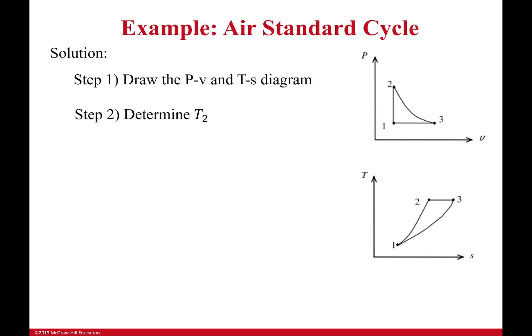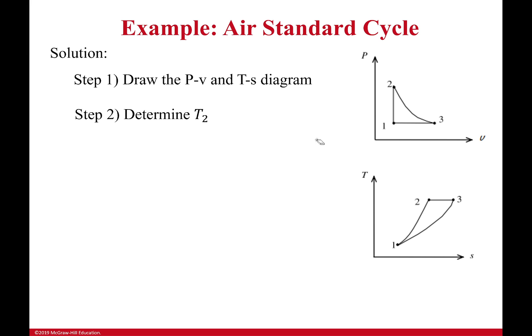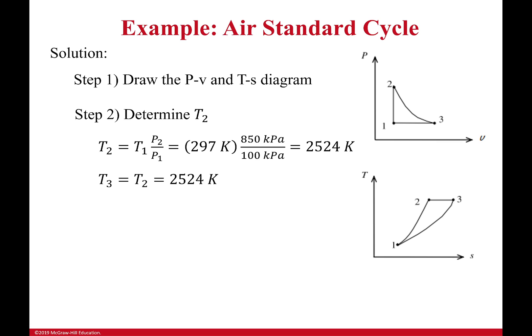The second thing is to start walking through here and finding our temperatures. Why temperatures? Because we have constant specific heats, which means H doesn't require going to the tables. Instead, all we need to find H or U is to look at the temperatures. Since it's an ideal gas — that's part of the air-standard assumptions — we can use our ideal gas relations to get this.